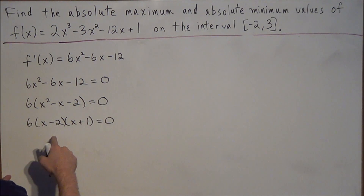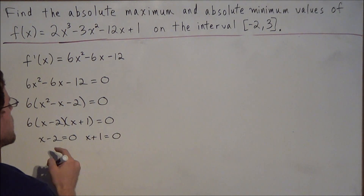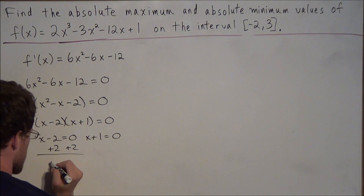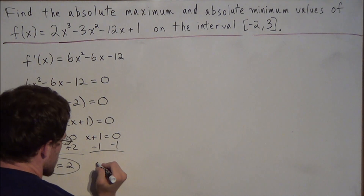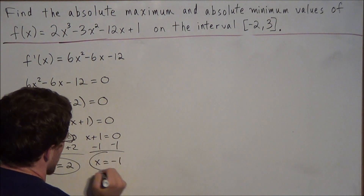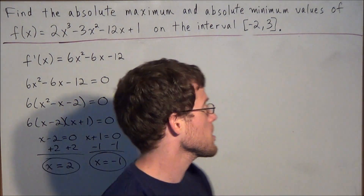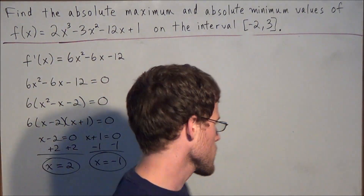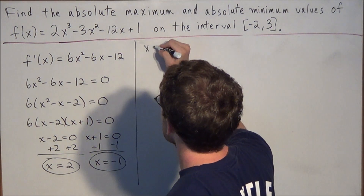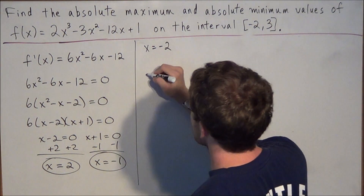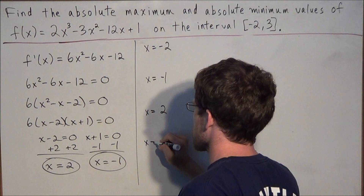We set each factor equal to 0. From x − 2 = 0, we add 2 to both sides, giving our first critical value x = 2. From x + 1 = 0, we subtract 1 from both sides, giving our second critical value x = −1. To use the closed interval method, we plug in the critical values and the endpoints into the original function, listing them in order: x = −2, x = −1, x = 2, and x = 3.